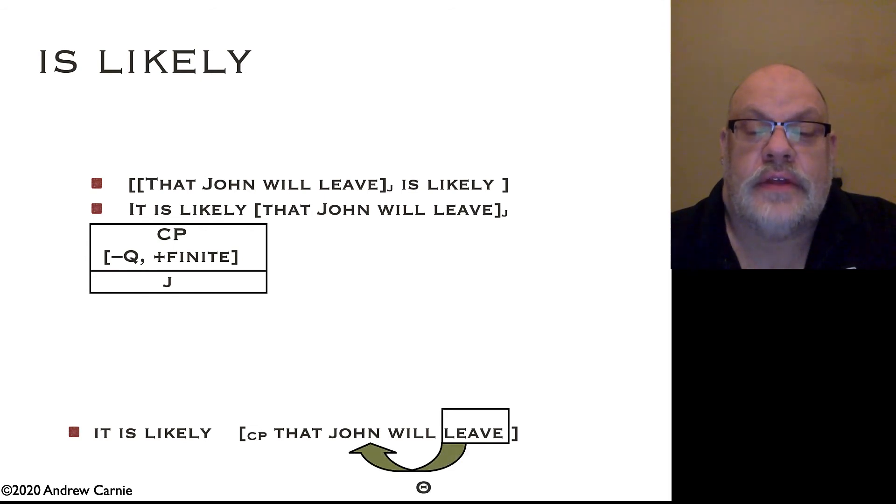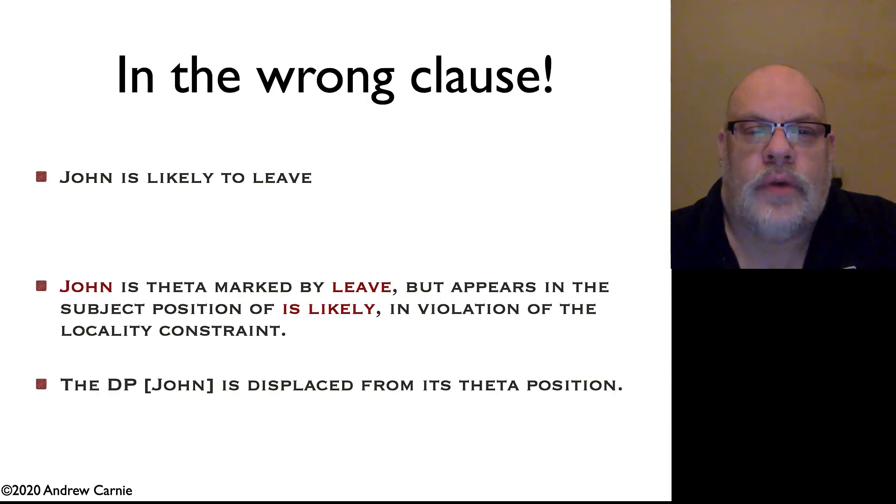Given this, leave is assigning a theta role to John, or more accurately, the null active head is, but we'll just abbreviate that here, and likely is assigning a theta role to the CP. Now what's going on with John is likely to leave? Here we have the same thematic properties. Leave seems to be assigning a theta role to John, but John is not in the same clause as leave. So we have to think about ways we can do this. One way is we have a rule of DP movement, and the DP John is moved from its theta position up into the subject position of that higher clause.